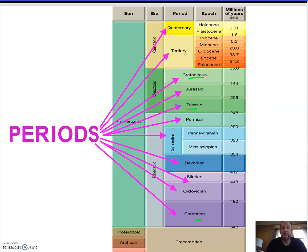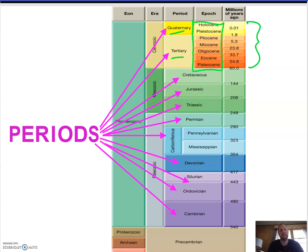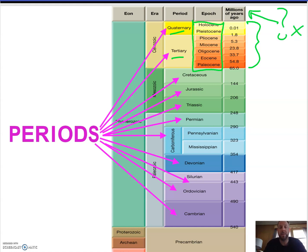Then we go into more recent times with the Cenozoic, which we break down into the Tertiary and Quaternary. We also break these down into further very specific names — we'll talk about epochs shortly. The Cenozoic is still ongoing, so we don't know when the next extinction is going to be, other than the fact that it's going to be the human extinction.